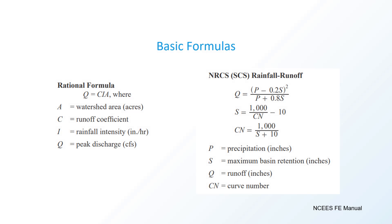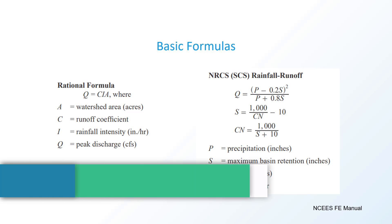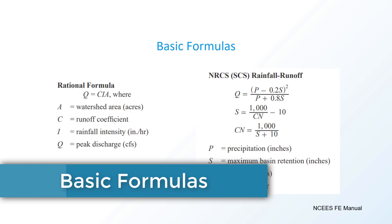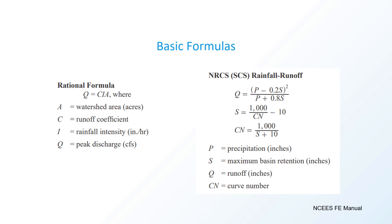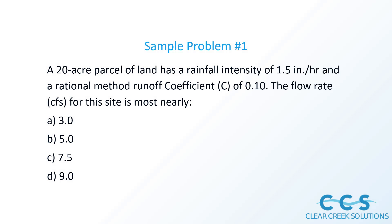Let's go into some basic formulas. This is taken straight from the FE manual for the civil engineering FE exam. We've got the rational method — Q equals CIA — and the SCS rainfall runoff equation. We're going to do a sample problem with both so you can see how these equations work. For our first sample problem: a 20-acre parcel of land has a rainfall intensity of 1.5 inches per hour and a rational method runoff coefficient of 0.1.